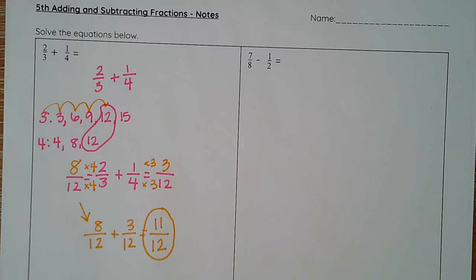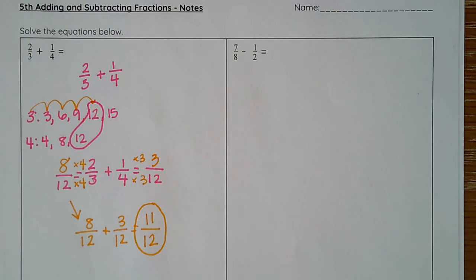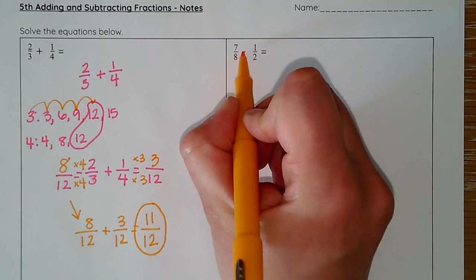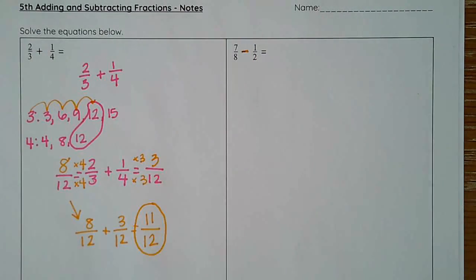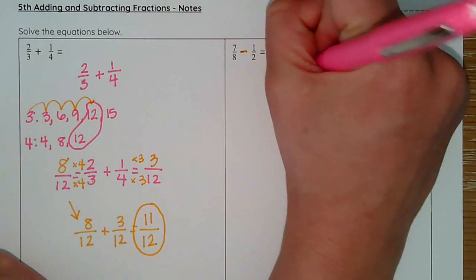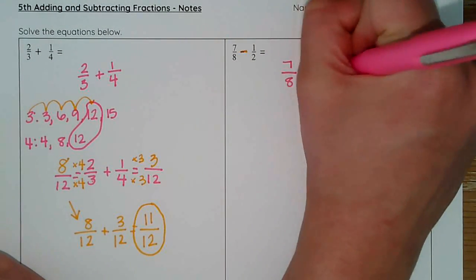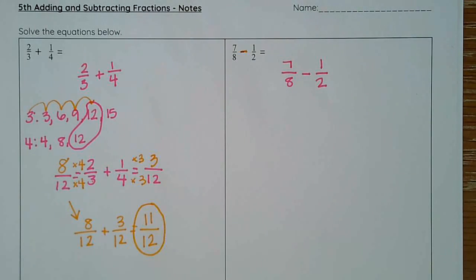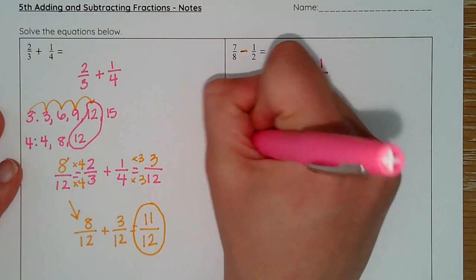Let's try a subtraction. My procedure is the exact same. However, I do want to make sure that I know that I am subtracting. So I've got seven-eighths minus one-half. I cannot combine those at the moment because they don't have the same denominator.